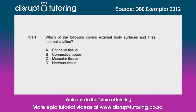Which of the following covers external body surfaces and lines internal cavities? Is it A, epithelial tissue; B, connective tissue; C, muscular tissue; or D, nervous tissue?